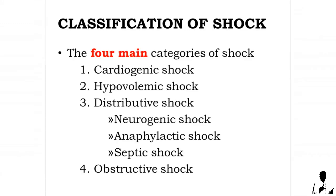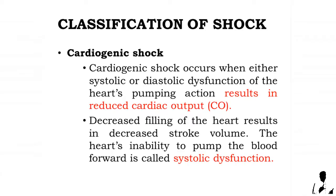Any condition that significantly affects any of the above may precipitate a shock state. The four main categories of shock are: 1) cardiogenic shock, 2) hypovolemic shock, 3) distributive shock — which includes neurogenic shock, anaphylactic shock, and septic shock — and 4) obstructive shock.